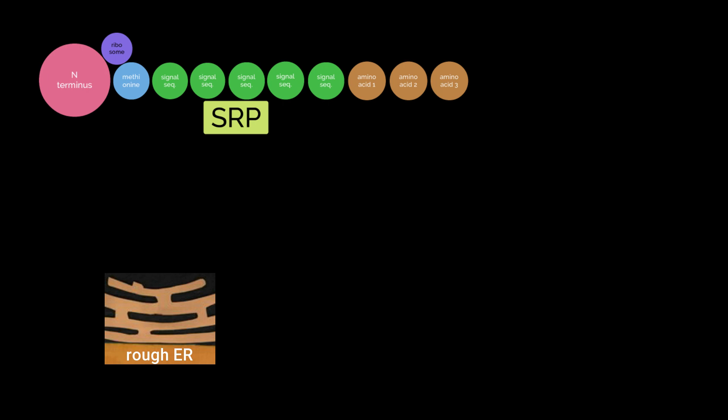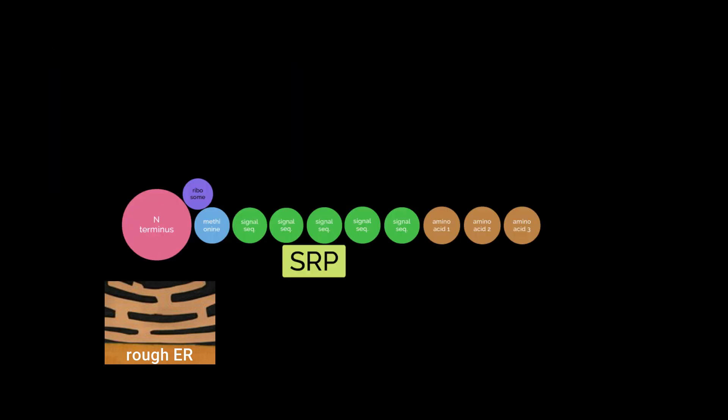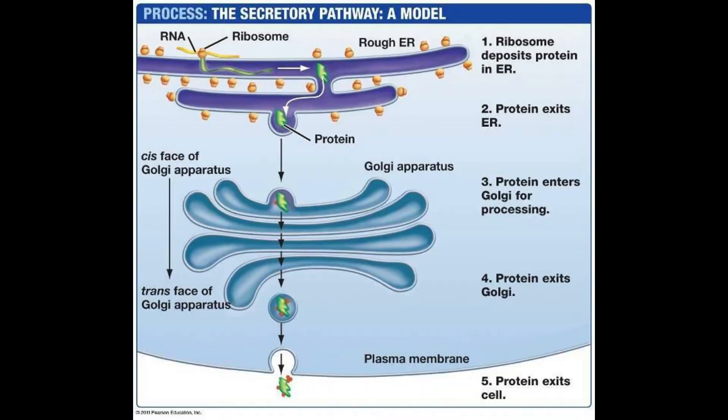Once the SRP has attached to the amino acid chain, it will drag it and the ribosome to the rough endoplasmic reticulum, or ER, where the protein will be synthesized and reach its tertiary structure. Remember, tertiary structure is the protein in its folded form. At this point, the protein that is on the surface of the rough ER will be pinched off in a vesicle. This vesicle travels all the way through the cell cytoplasm until it reaches the Golgi body.